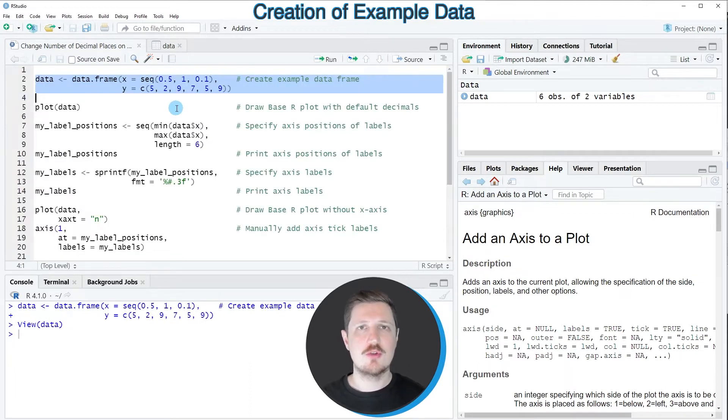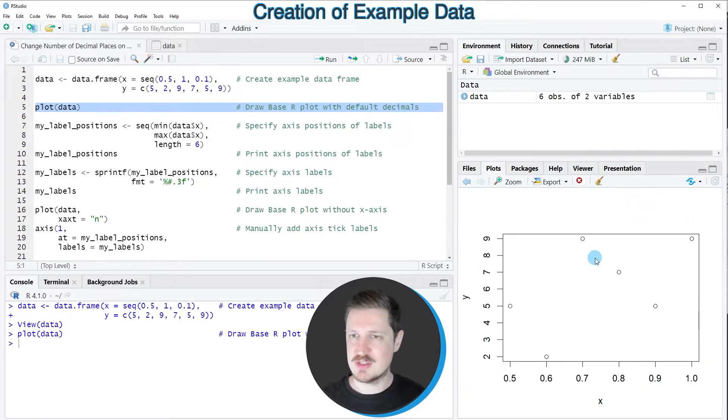So if we want to draw our data in a scatter plot, we can simply use the plot function, as you can see in line 5 of the code. And in this case, I'm applying this function to our entire data frame. So after running line 5 of the code, you can see at the bottom right that a new scatter plot is created, which shows our six data points.